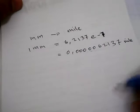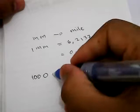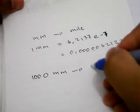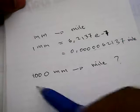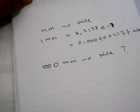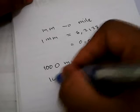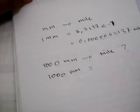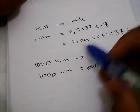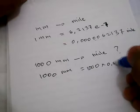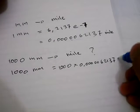For example, I want to convert 1,000 millimetres into miles. How much is 1,000 millimetres converted into miles? To solve this problem, the first thing you need to do is write down 1,000, give it an equal sign, and then write 1,000 again and multiply it with 0.000062137 miles.